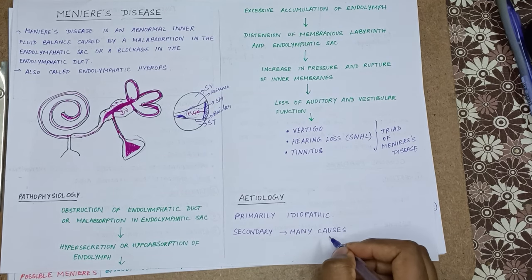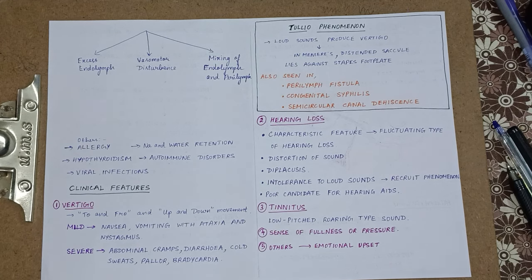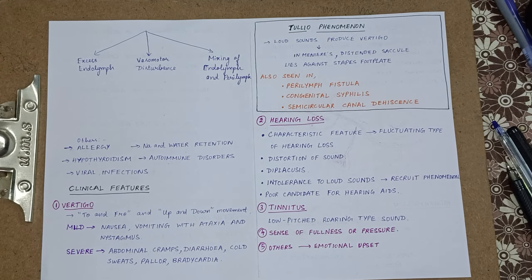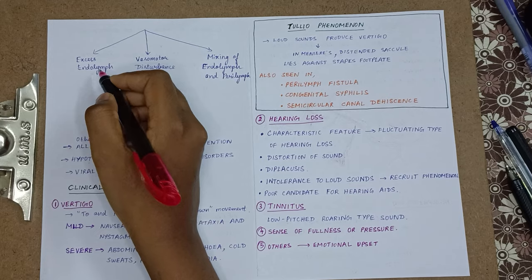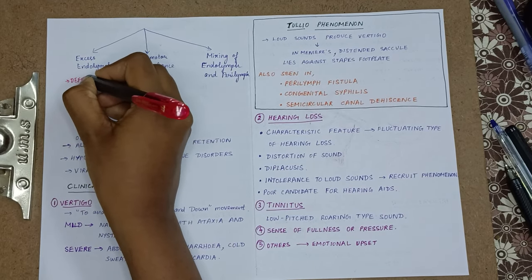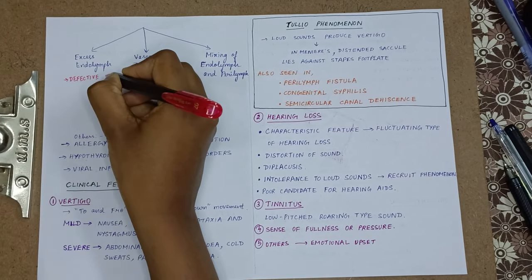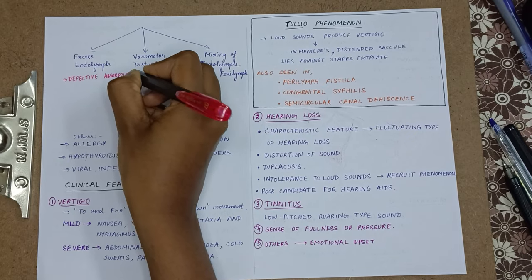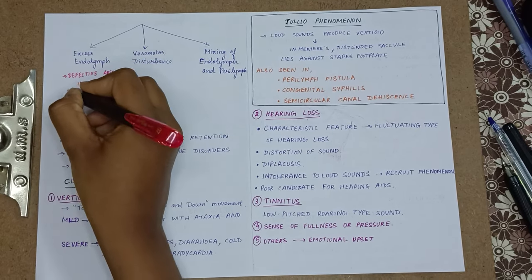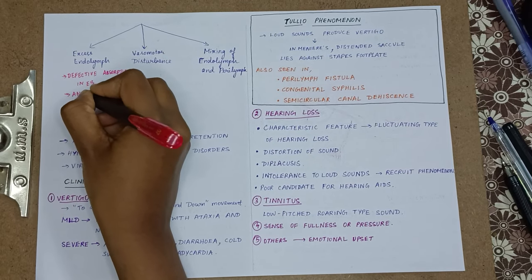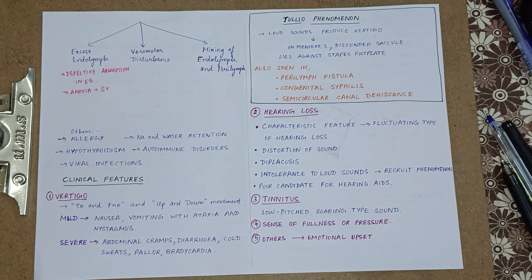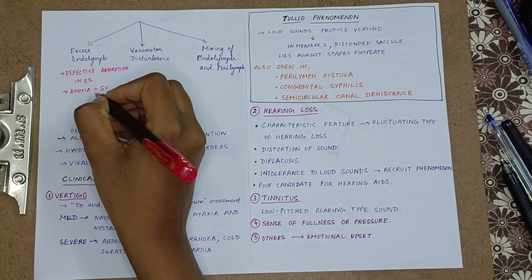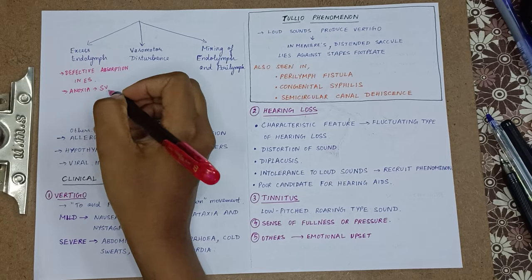Discussing about the secondary causes of Meniere's disease, there are three mechanisms by which a person is going to get Meniere's disease. First, there is excess endolymph. It can be due to defective absorption in the endolymphatic sac, or anoxia in capillaries of the stria vascularis, due to which there is increased permeability and transduction of fluid, which causes increased production of endolymph.